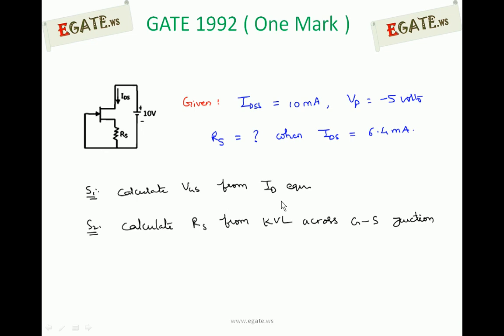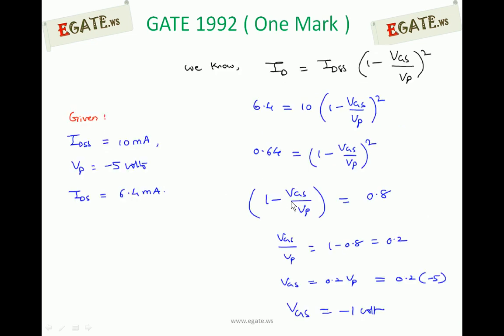First calculate VGS from the drain current equation. We know the drain current equation is ID equals IDSS into 1 minus VGS by VP whole square. In this equation the given parameters are IDSS is given, VP is given, IDS is given. IDS is ID only in this equation, 6.4 mA. So substitute those values.